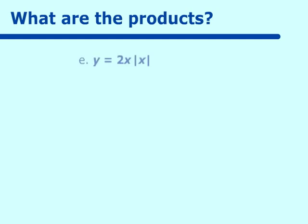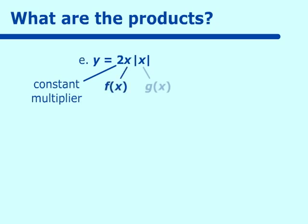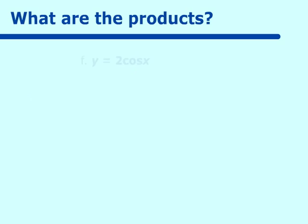On the following problem, 2 multiplies x times the absolute value. Again, the 2 becomes the constant multiplier, x is our f of x, and the absolute value of x is the g of x. On problem f, we have 2 cosine x. The 2 is the constant multiplier and cosine x is not multiplied by anything else, so it is just the function f of x.